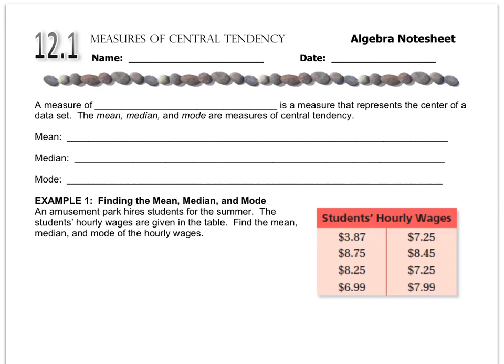This chapter is about different types of statistical measurements and statistical graphs, and we've got this fancy name for what we're going to talk about today, which is central tendency. A measure of central tendency is a measure that represents the center of a data set. For example, the mean, the median, and the mode are measures of central tendency.